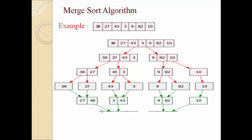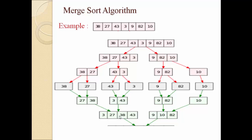Then 27 is compared with 43. The minimum is 27, so 27 will be inserted in the list and the index of this list will be increased by 1. Then 38 will be compared with 43, so 38 is minimum and 38 will be inserted, then 43 will be inserted. In this way we get a list: 3, 27, 38, and 43 — all in ascending order.